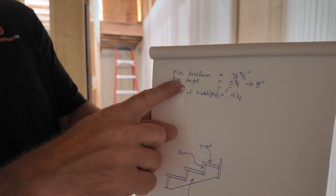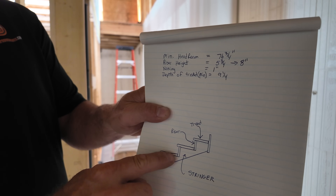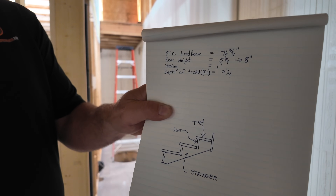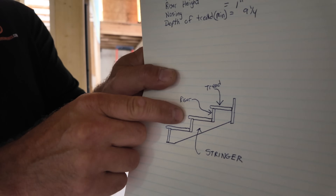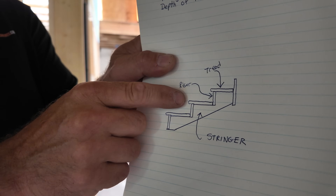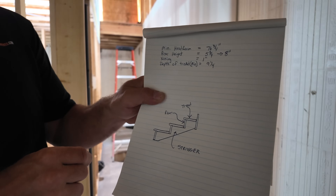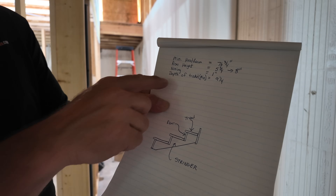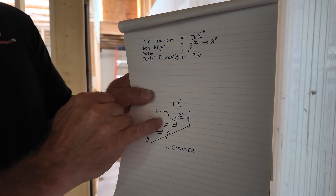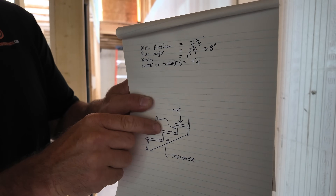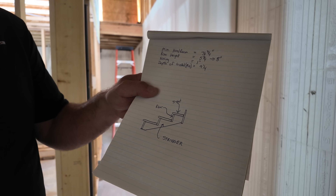Riser height can range from 5 and 3/4 to 8 inches in my area — that's the distance from top of tread to top of tread. Nosing is the little overhang at the front of the tread that overhangs the riser, and the general rule of thumb is about an inch. Depth of treads is measured from an imaginary line from the front of one riser to the front of the next riser, and they like to see a minimum of 9 and 1/4 inches.